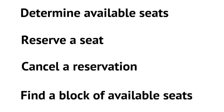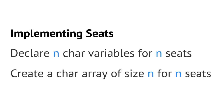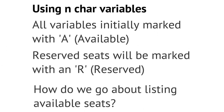We haven't said anything about the actual implementation — how we would represent the seats with a specific structure. One thing we could do is declare N character variables for N seats. Maybe a concert hall has 300 or 500 seats; we'd declare that many character variables. All those variables would initially be marked with the character 'A' to represent available, and when we reserve a specific seat, we'd mark that variable with an 'R' to indicate it's reserved.